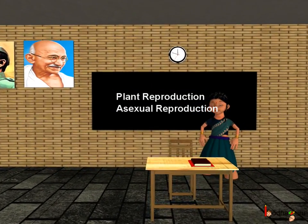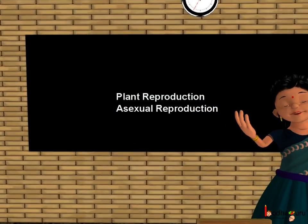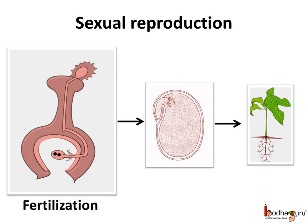Good morning children. Today we shall learn more about plant reproduction. We know what sexual reproduction in plants is. In sexual reproduction, the male and female gametes participate, and the zygote is formed after the fusion of male and female gametes, which is called fertilization. Then the zygote changes into an embryo, and then the embryo changes into a baby plant, under the right conditions.